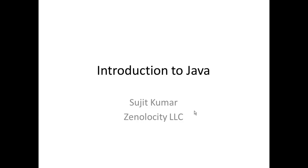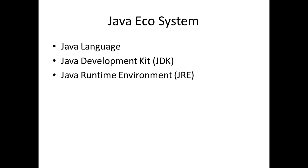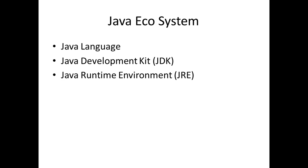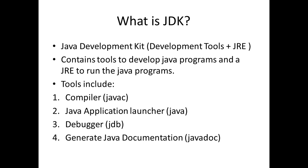In this class I'm introducing you to Java. The Java ecosystem basically contains the Java language, the Java Development Kit (JDK), and the Java Runtime Environment (JRE). The Java language is an object-oriented language. The JDK contains tools to develop Java programs and a JRE to run the Java programs.